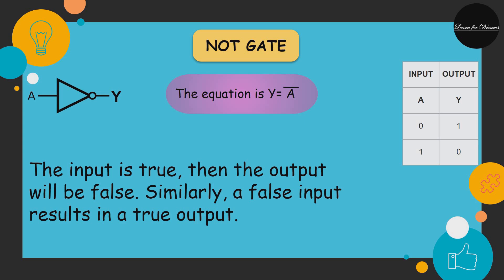In other words, if the input is true, then the output will be false. Similarly, a false input results in a true output. The standard NOT gate is given a symbol whose shape is of a triangle pointing to the right with a circle at its end.